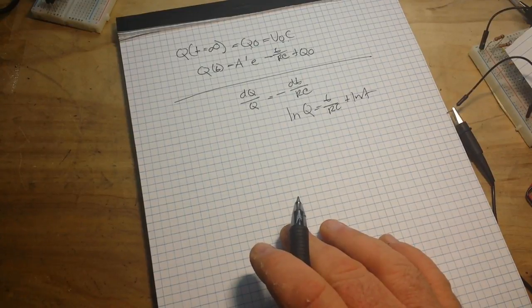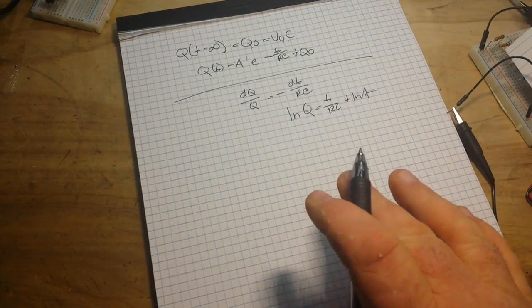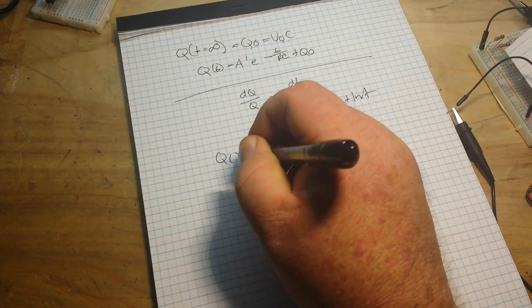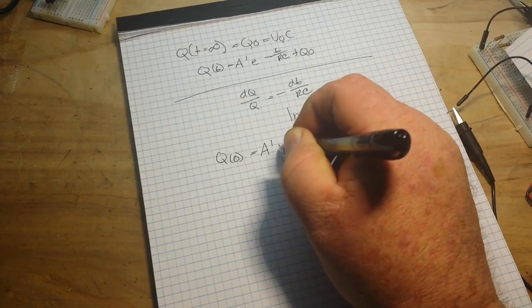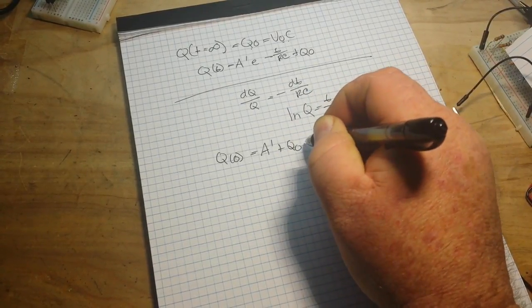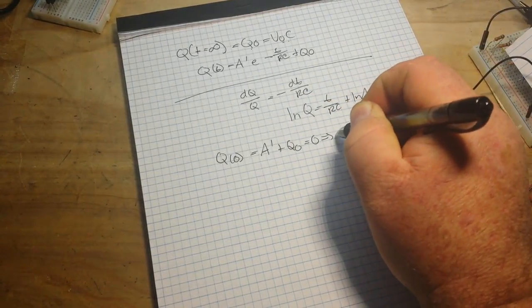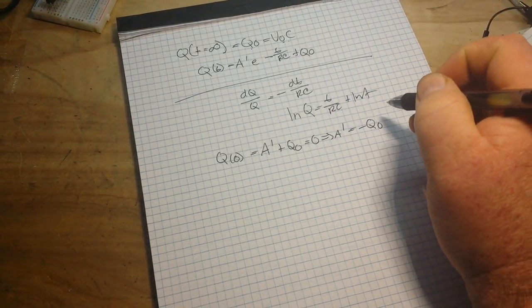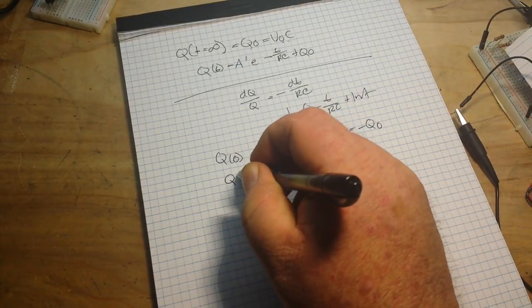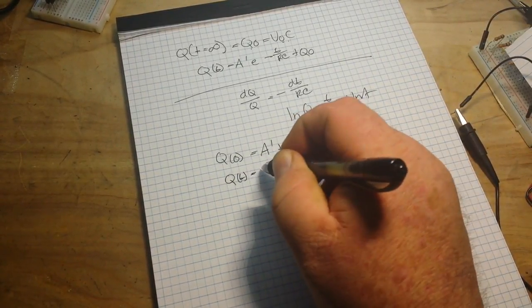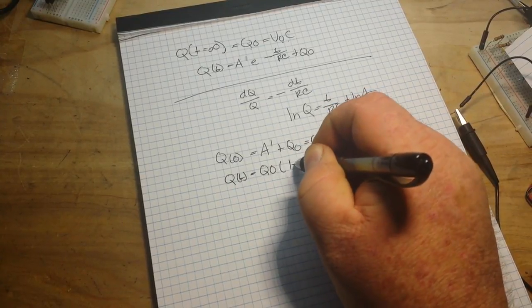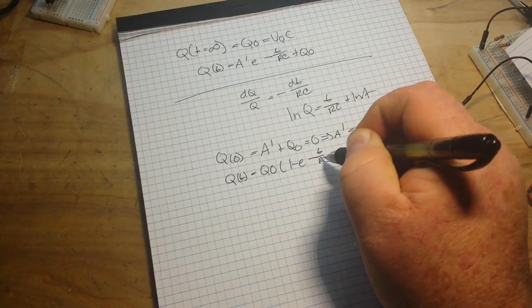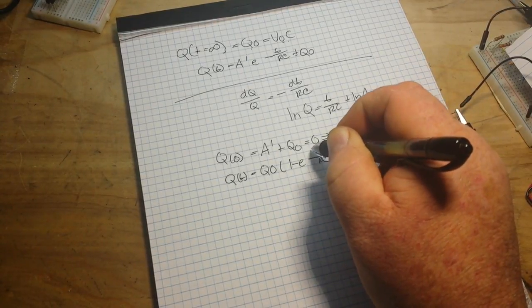So now that we've done that, we can do determination of the constants from our starting positions. And we can say that Q zero is equal to A prime plus Q zero equal to zero, actually A prime equals minus Q at zero or QT is equal to Q zero, one to the minus E to the minus T over RC. And that goes there.